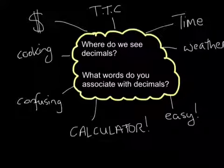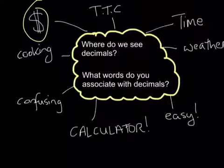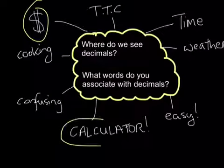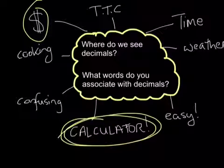We first did a quick Minds On about where do we see decimals and what words do we associate with decimals. Most people as soon as they hear decimals they think money. Money was actually the number one choice when we brainstormed. The second word that came to everyone's mind was using a calculator. Every time you see decimals you run straight to the calculator. That kind of set off a trigger in my head about what students actually know about using decimals and actually manipulating them and understanding them. It gave me a good Minds On and got the students engaged.